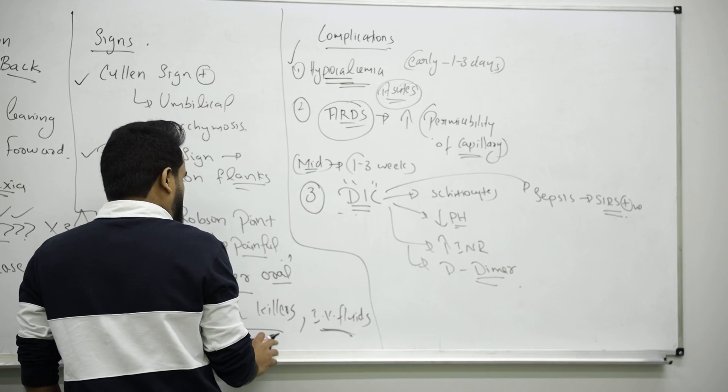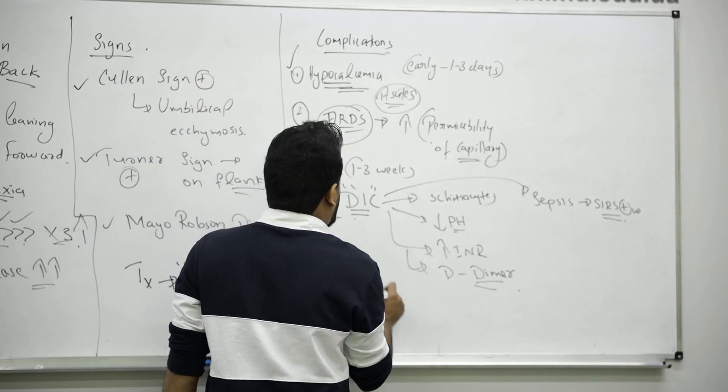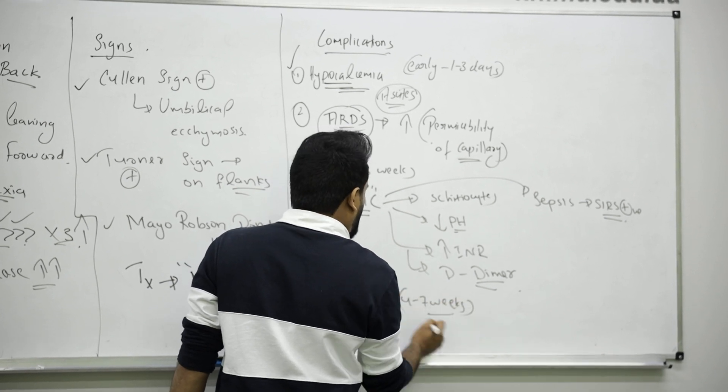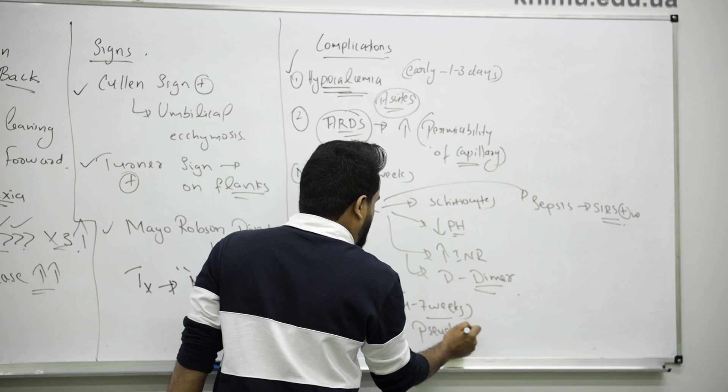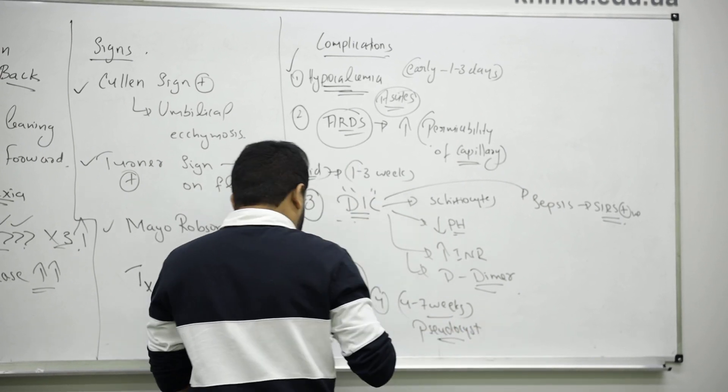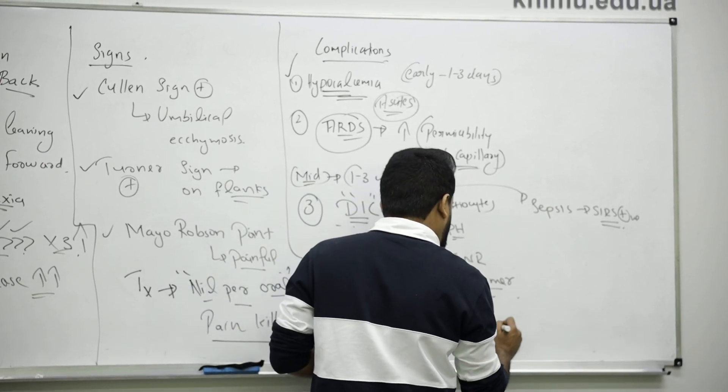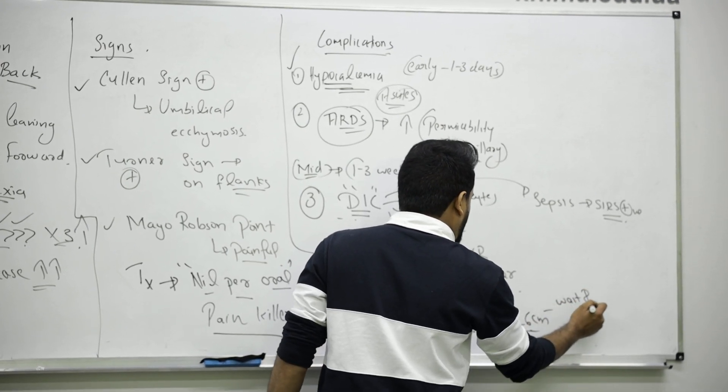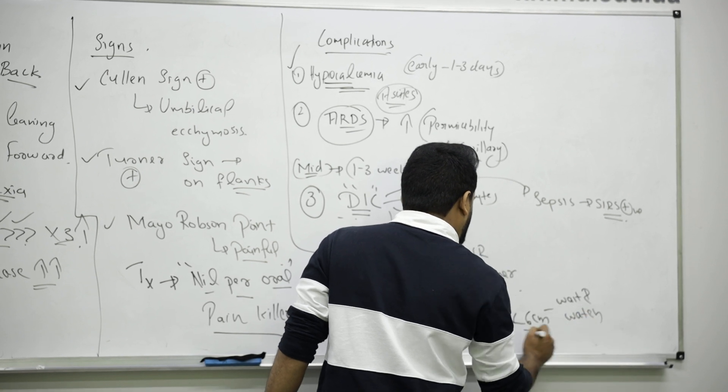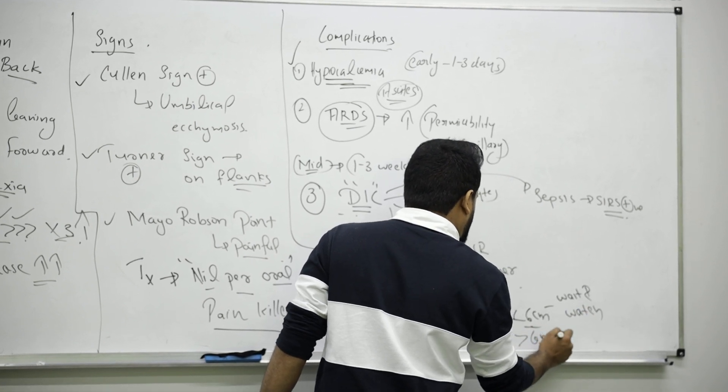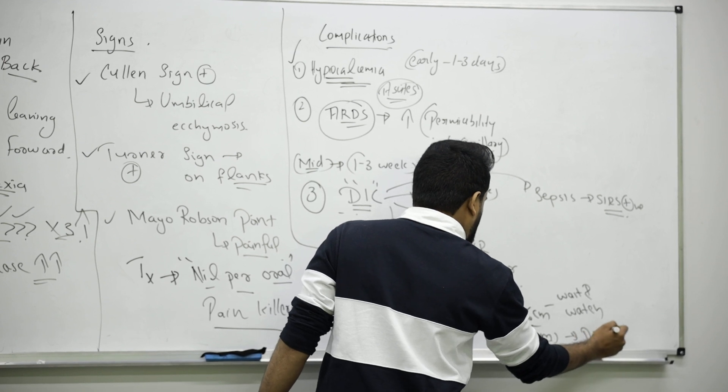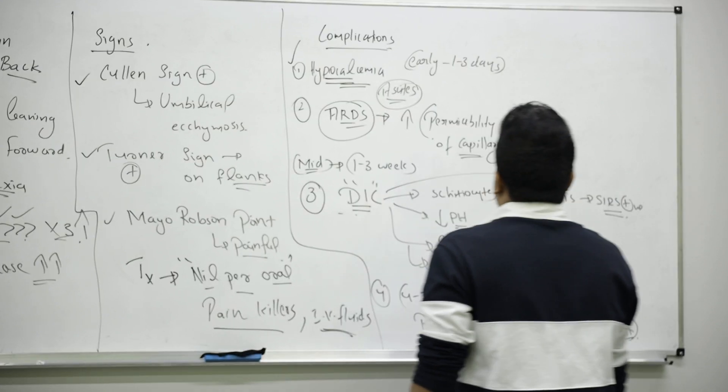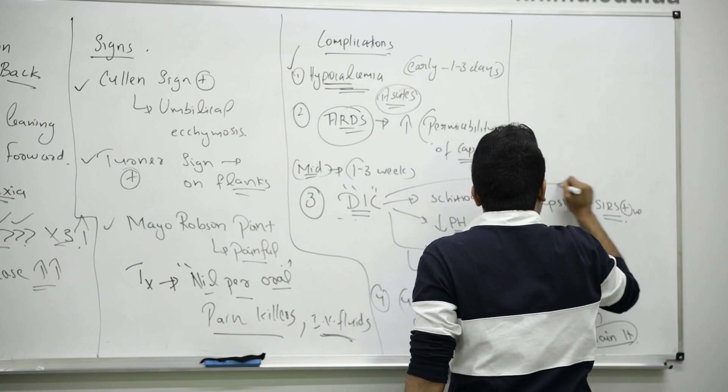Remember, that is a late complication. After four to seven weeks, patient can have something called pseudocyst formation. If pseudocyst is less than 6 centimeters, no issue, just wait and watch. If more than 6 centimeters or they are growing, you have to drain the cyst or do surgery or remove it.